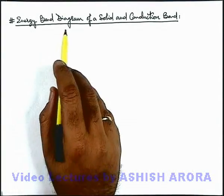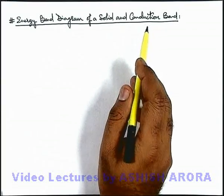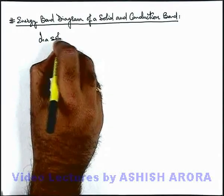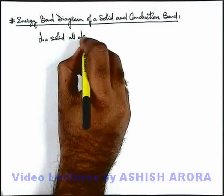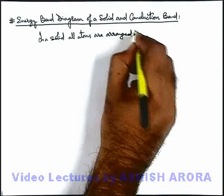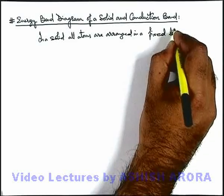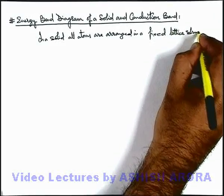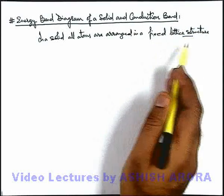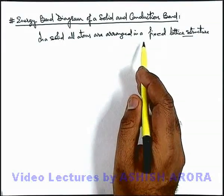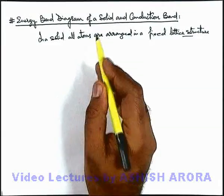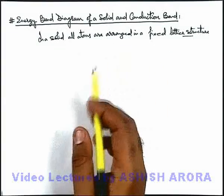Let's discuss the energy band diagram of a solid and conduction band. In a solid, all atoms are arranged in a fixed lattice structure. There is a specified lattice structure in which, at a fixed intermolecular separation, molecules are arranged. If these are monatomic molecules, then all atoms are arranged in a fixed lattice structure.